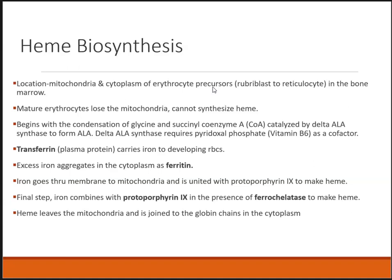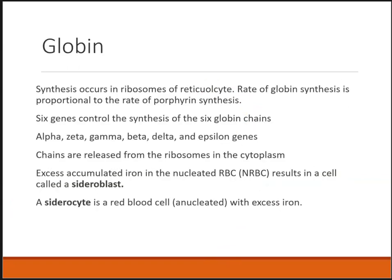The actual protein floating around in your bloodstream that transports iron is called transferrin. It will transport iron to the bone marrow so that the developing red blood cells can insert it into making heme. Any excess iron is saved on the molecule ferritin. Iron goes through the membrane to the mitochondria where the protoporphyrin 9 ring allows iron to be inserted in the presence of ferrochelatase to make heme. Once the heme leaves the mitochondria, it attaches to the globin chains in the cytoplasm.